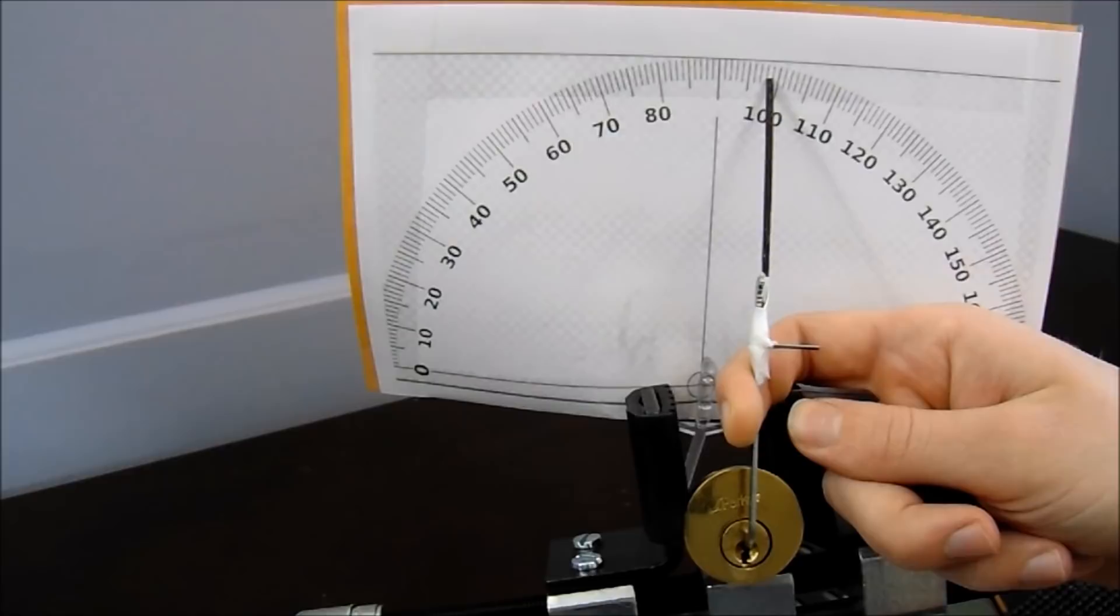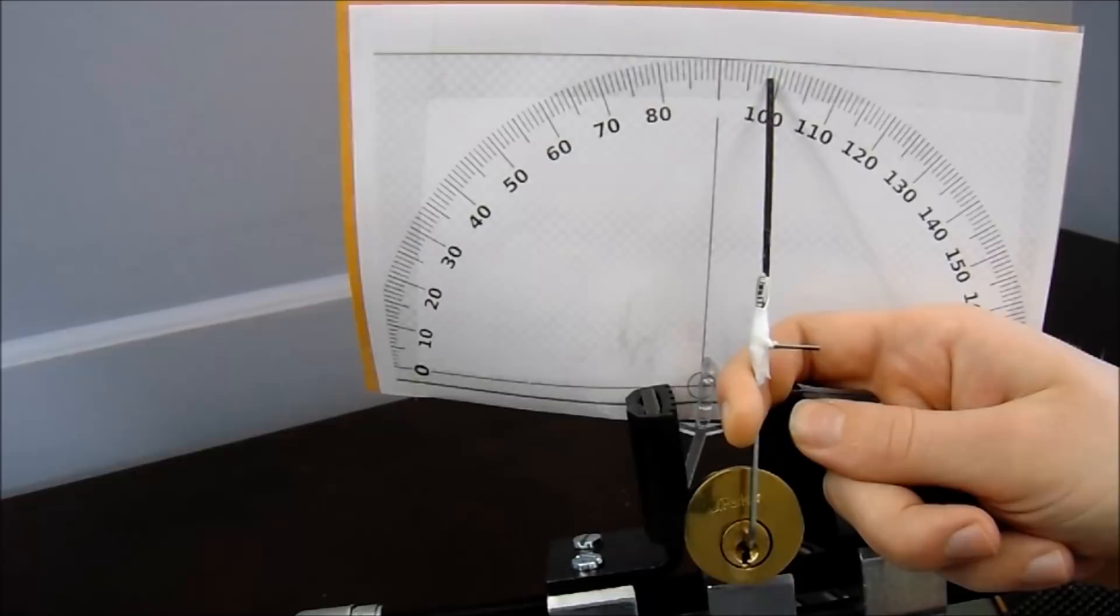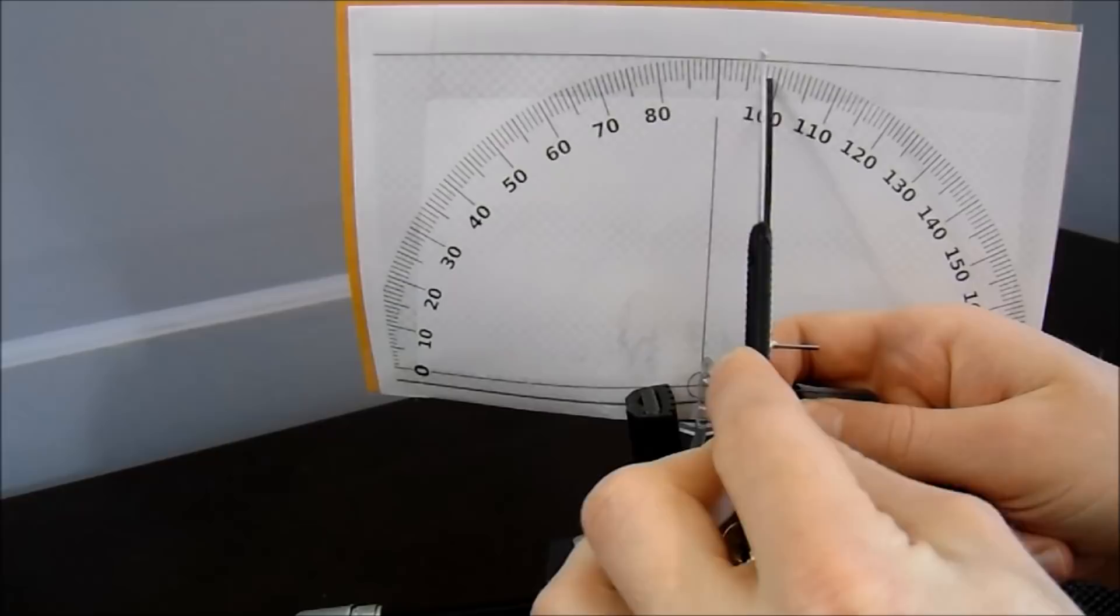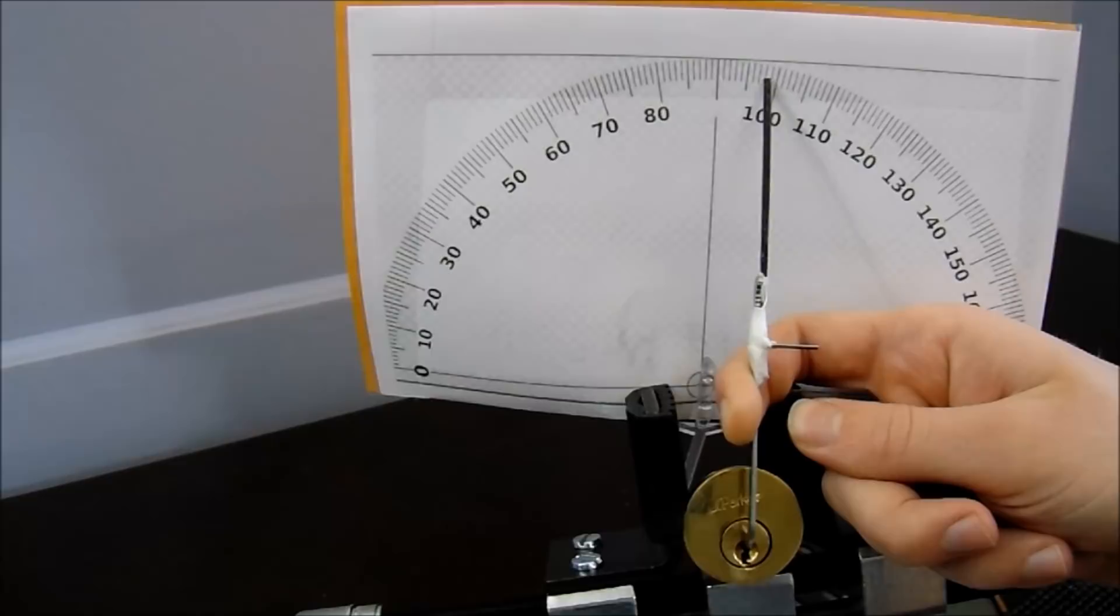I know that we set pins 1, 2, 4, and 5, so hopefully it will be pin number 3. What we're going to do is probe each pin and look for the one that will start to counter-rotate back. We're going to need to be allowing it to counter-rotate back as we're holding some tension on it so hopefully we can set that pin.